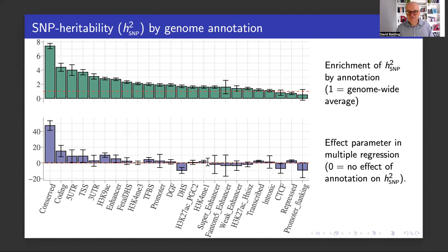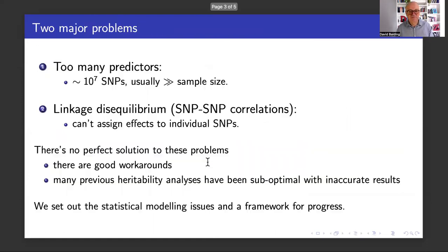There are tons of interesting results like this in the paper, and similar results have been published in the past. So why did we publish our paper? There are two fundamental problems in these kinds of analyses. There's a too-many-predictors problem — a classic statistical problem.